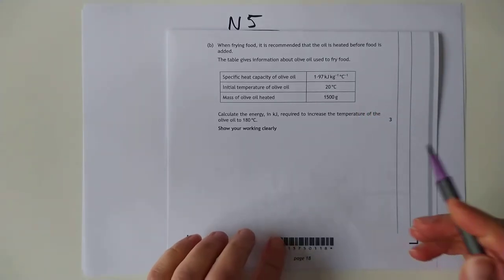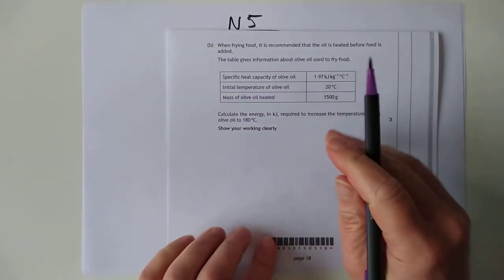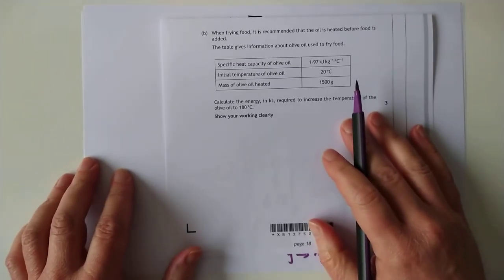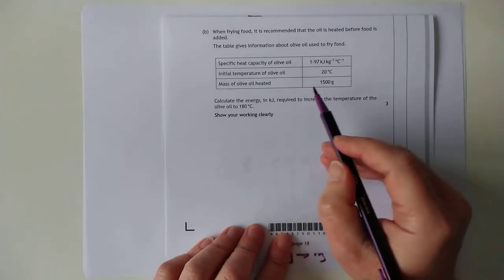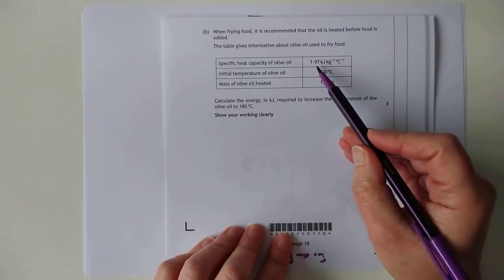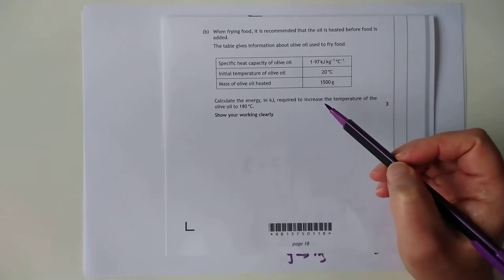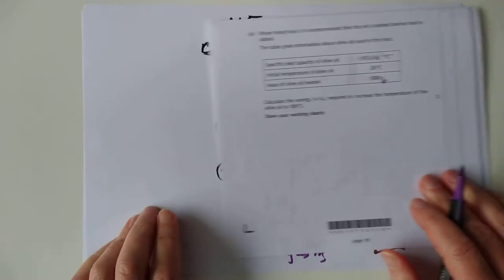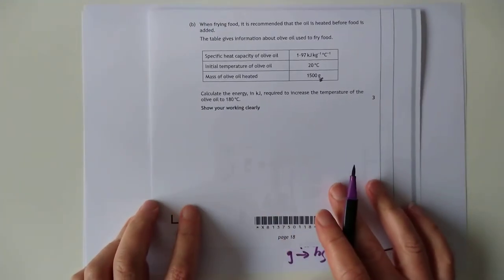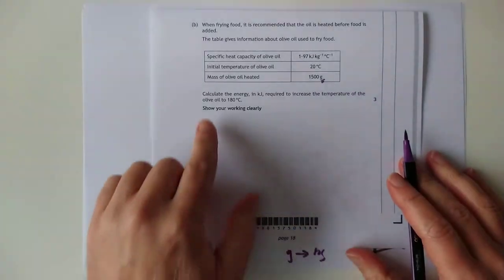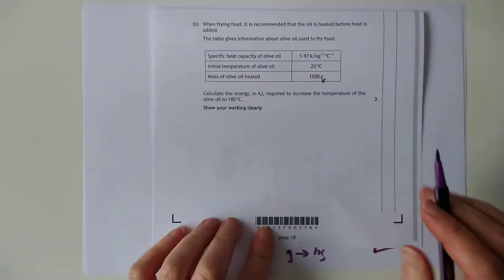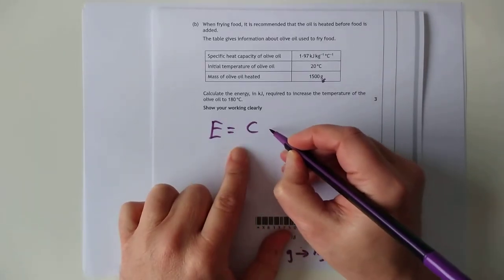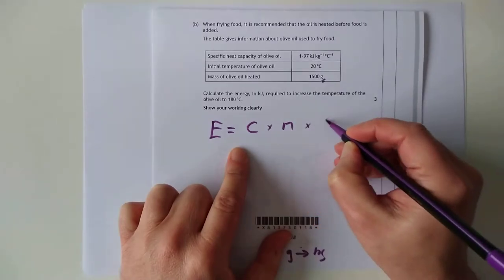So, just for an unusual change, they've said specific heat capacity. That's the C number. So everybody's used to using 4.18, and that's true for water, but we're not heating water today. So 1.97 is the value of C. They've given you the mass of the olive oil heated, but look, it's in grams. And I said the mass needed to be in kilograms. They've given you an initial temperature. And they're asking you to calculate the energy. So we are indeed requiring to calculate E. So we will need to know C times M times delta T.